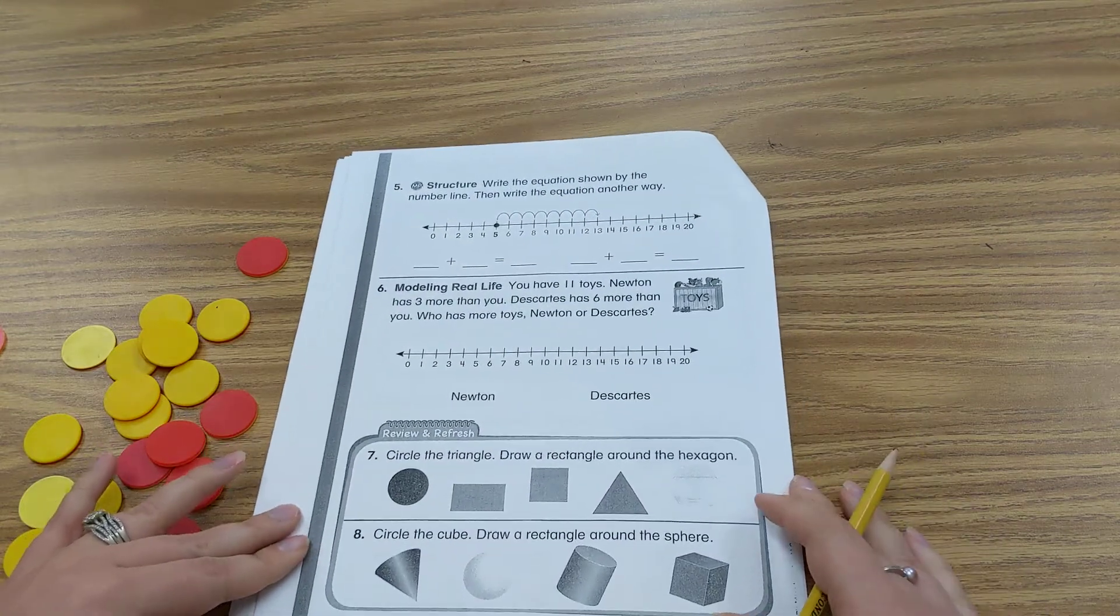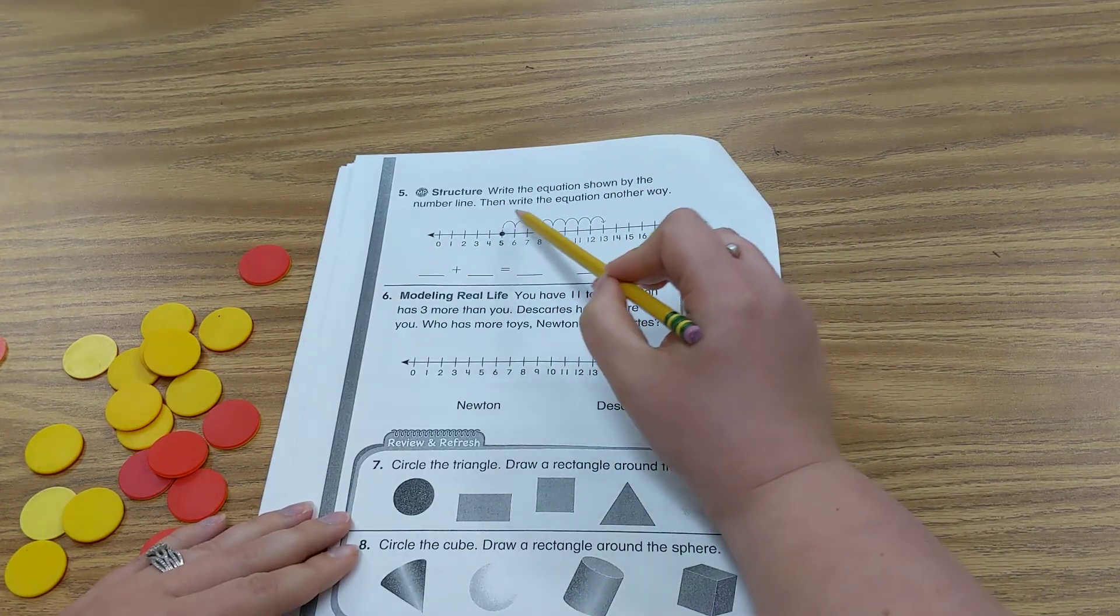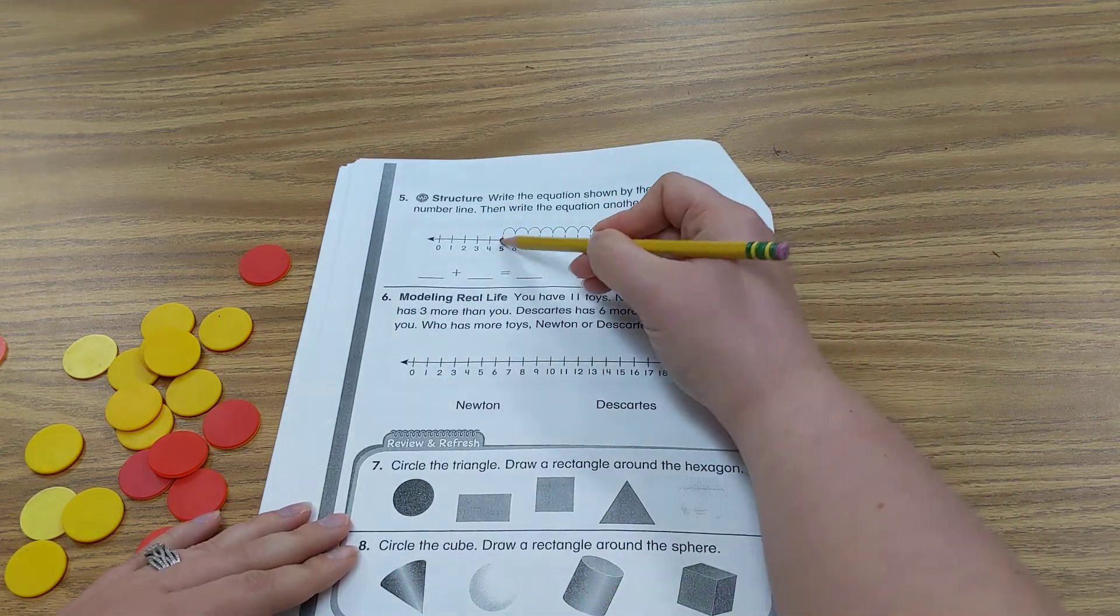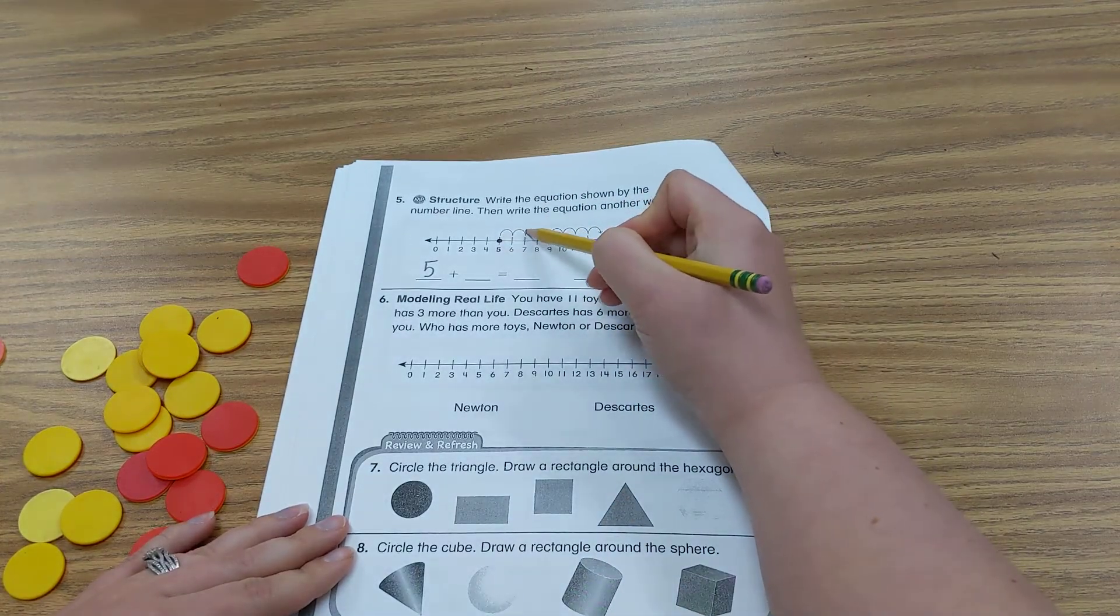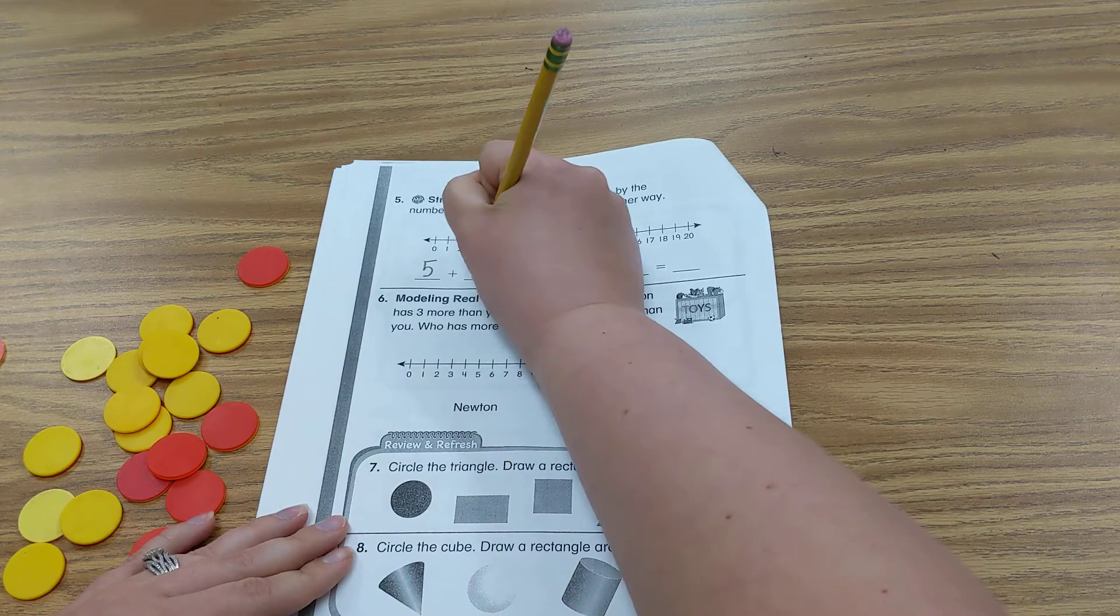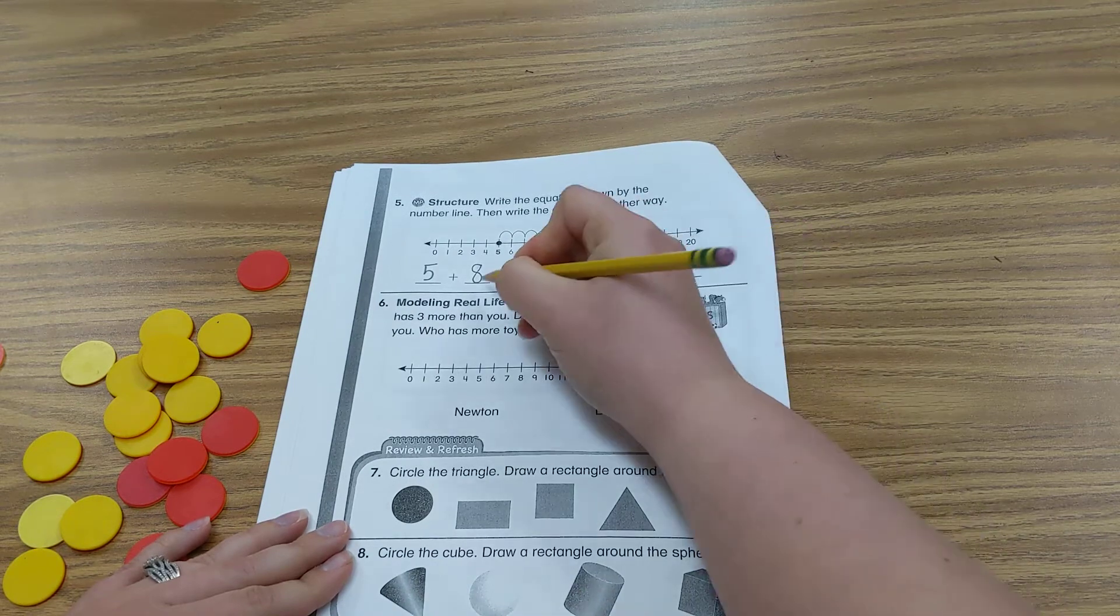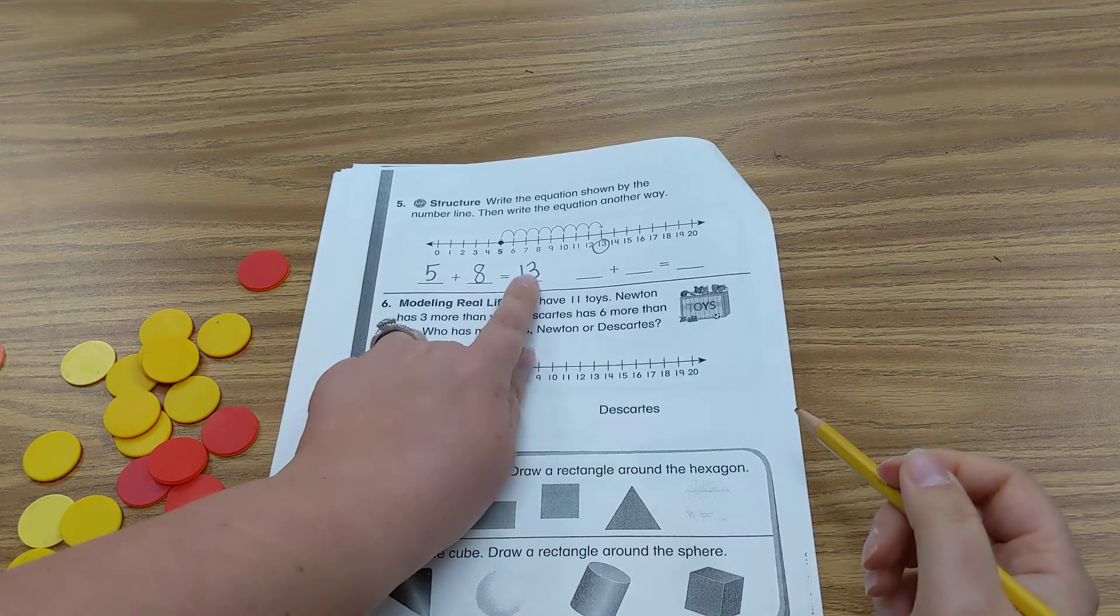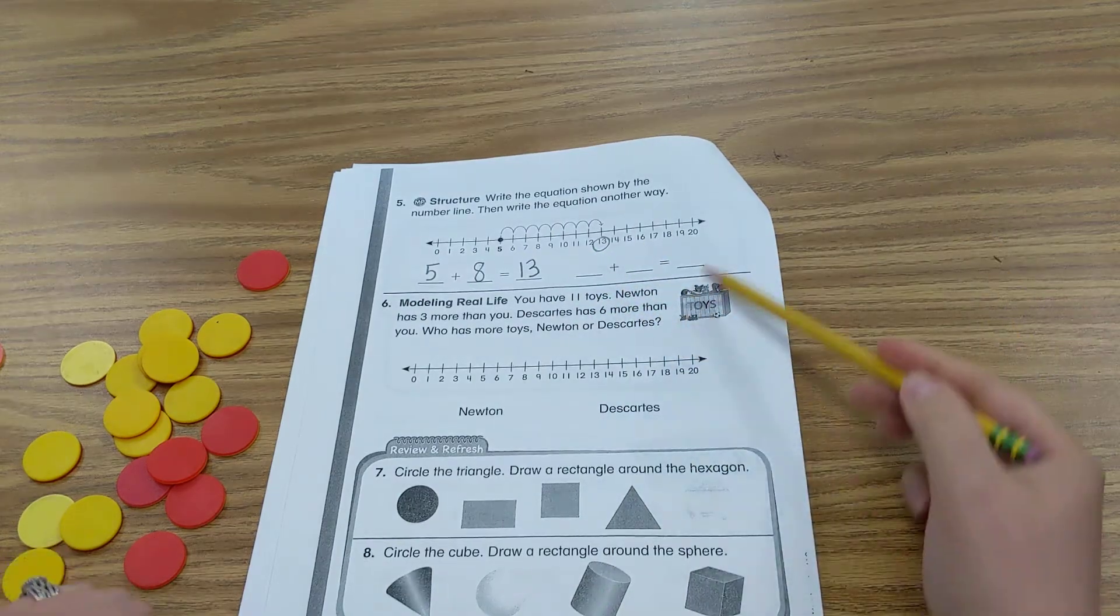We are on the last page of math for today. Write an equation shown by the number line. Then write the equation another way. So we have 5 as our starting point. So 5 is one of our addends. 1, 2, 3, 4, 5, 6, 7, 8. 5 plus 8. So we jumped 8 times. And that equals 13. Remember, your addends can change, but your sum will stay the same. And what I mean by change is they can change spots. So you do this part.